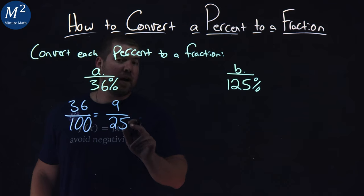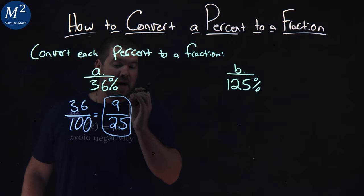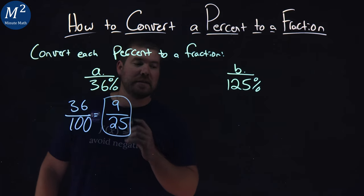9 over 25 cannot be simplified anymore. And so we have our answer for the fraction, 9 over 25 is equal to 36 percent.